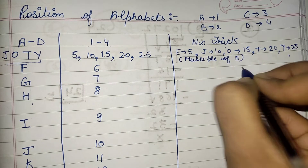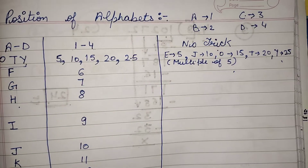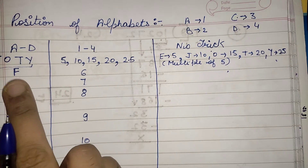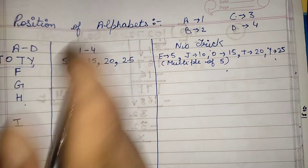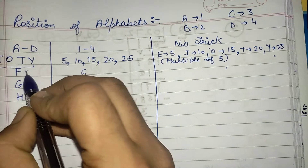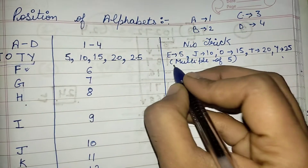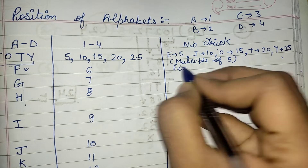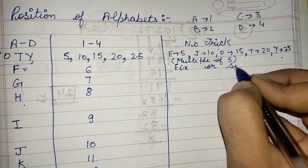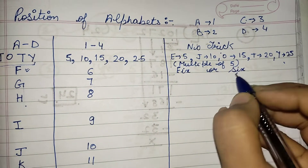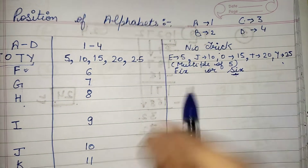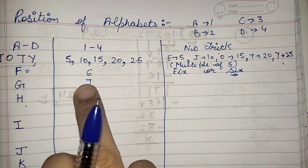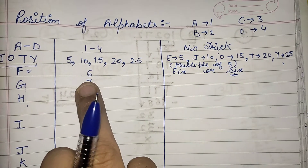Next is F. With the F word you can remember that F sounds like 'fix' or 'six', so simply we can remember that F is present at the sixth position in the alphabets.